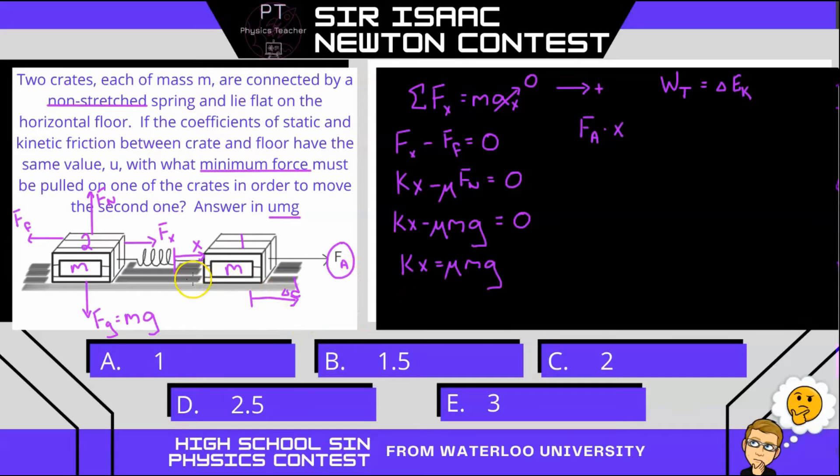What other work is being done? We have friction on this box, which is in the opposite direction as displacement, giving us cos of 180. So we have minus the force of friction times x. We also have, as we pull this across the floor, the spring pulling back on the crate, which is also in the opposite direction of d.